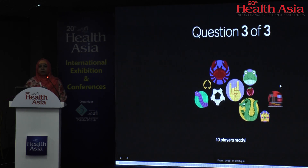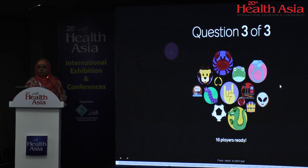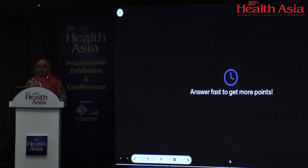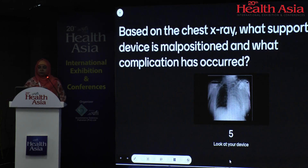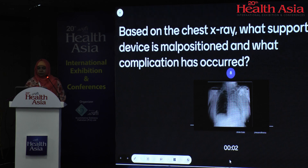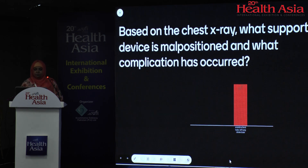This is the last quiz. You can look at your phone and zoom in. Based on the image, what support device is malpositioned and what complication has occurred? Most answers are correct — the endotracheal tube has been placed in the right main bronchus and there is left lower lobe atelectasis.